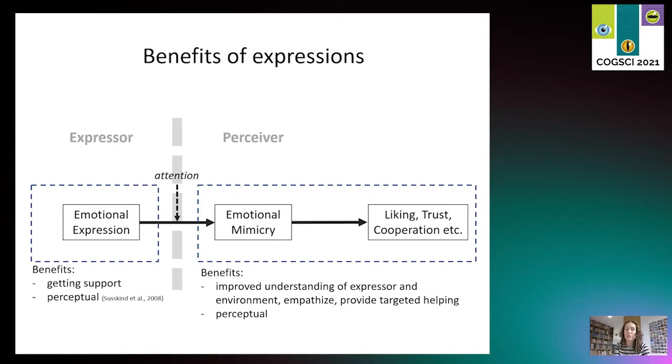Mimicking expressions by observers also has several benefits. First of all, you can probably understand the other person better when you're mimicking. And it may give you the same perceptual benefits. So when, for example, you're in an environment and there's a predator approaching you and you widen your eyes in fear and you can actually perceive the predator better, this of course has the same benefits for the individual standing next to you.